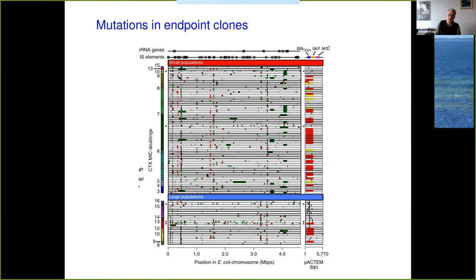This is a picture of the panel of mutations we found — here is the chromosome, here is the plasmid; small populations in red and large populations in blue. The red bars on the right-hand side correspond to the deletion of the TEM-1 gene. In particular, the small populations often deleted the TEM-1 gene. In some cases, since this is a multi-copy plasmid, some copies had it and others did not. This was a very prominent event, and I'll return to it at the end of the talk.